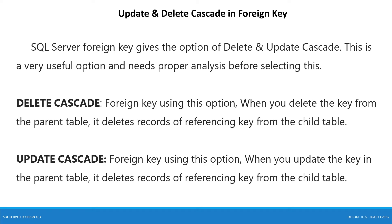Update and delete cascade in foreign key. SQL Server foreign key gives the option of delete and update cascade. This is a very useful option and needs proper analysis before selecting it. For example, if you want to delete or update the primary key column in a parent table which is referenced by some child tables as a foreign key, it will not allow you to do so because those columns are bounded with the foreign key constraint. If you try, you will get a foreign key violation message. But if you want to do it, you can use update and delete cascade. These are very useful features because they replicate the same effects on all child tables referring to the parent table on that particular primary key.